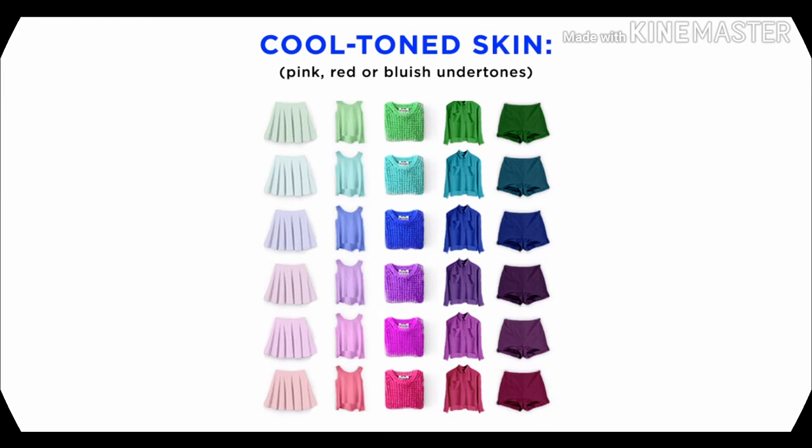If you are cool undertone, the best colors are jewel tones: sapphire blues, cobalt blue, periwinkle, turquoise, and emerald greens. Also flattering are deep purples, frosty shades of lavender, pinks, bright rosy reds, and super pale yellows — all of these look amazing against a cool undertone skin tone.